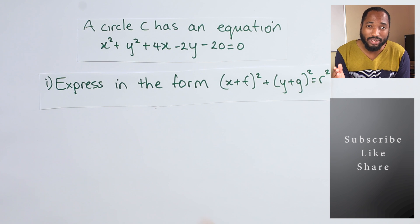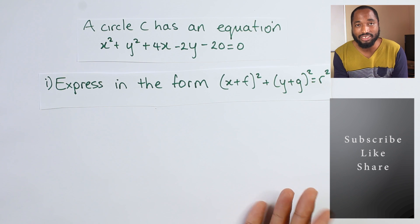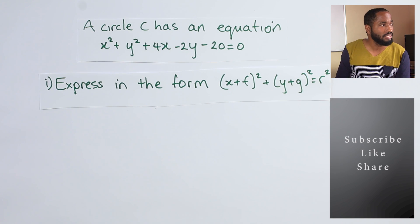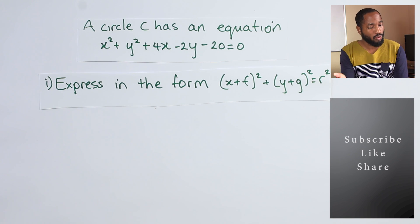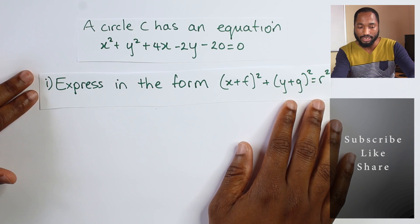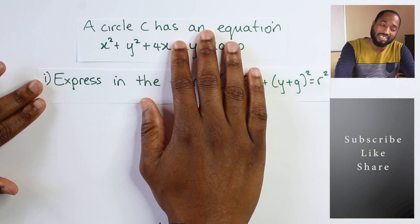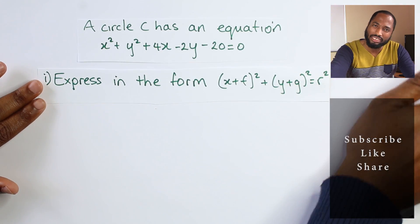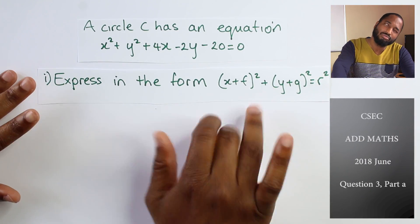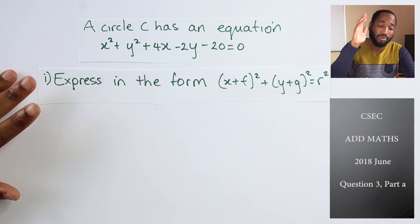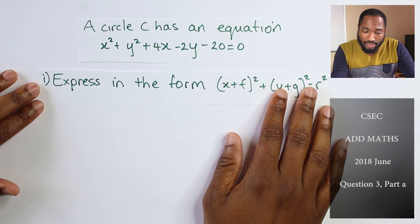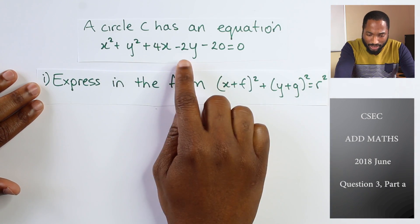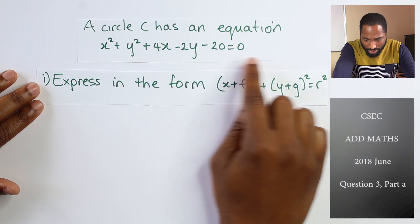So AdMath students, you all wanted some questions and someone requested a question on circles. So behold, a question on circles. This was taken from 2017, June, question 3, part A. The circle C has an equation: x squared plus y squared plus 4x minus 2y minus 10 equals 0, expressing this in a given form.